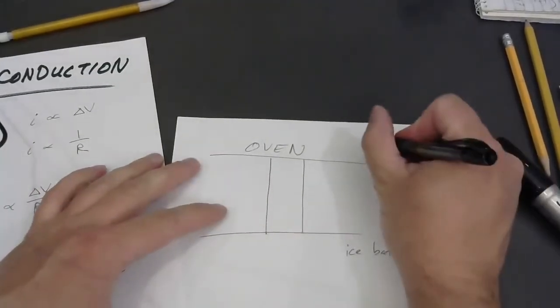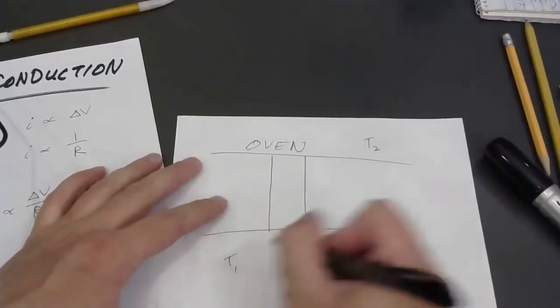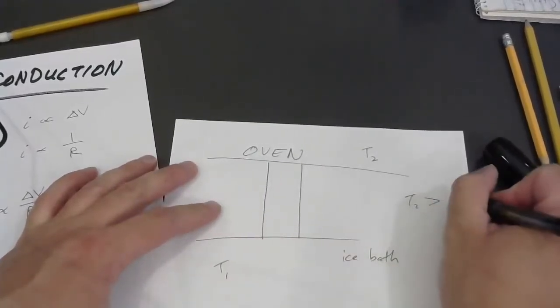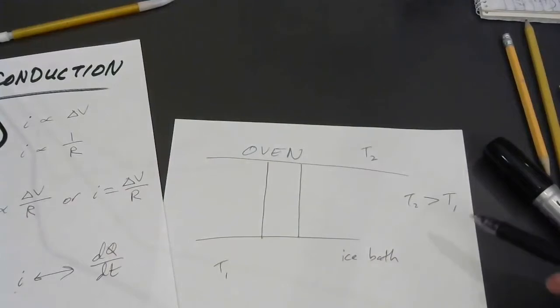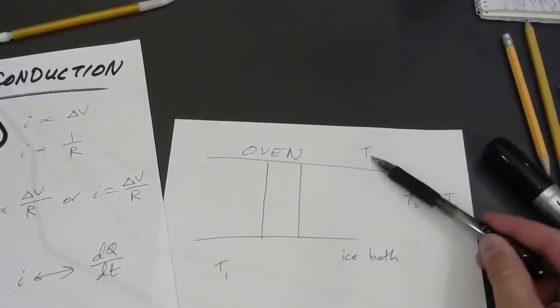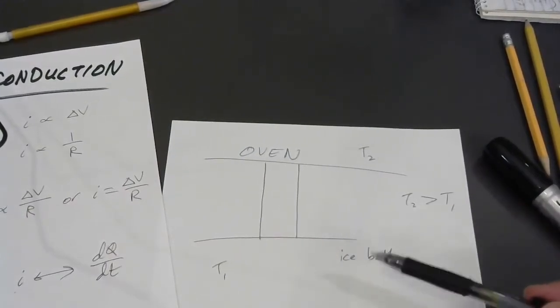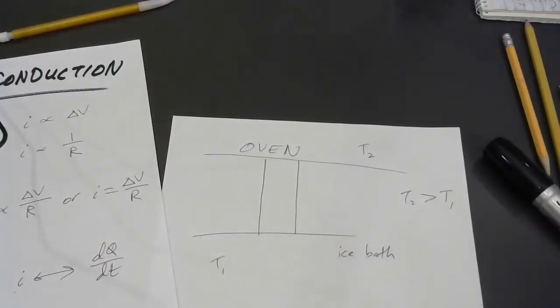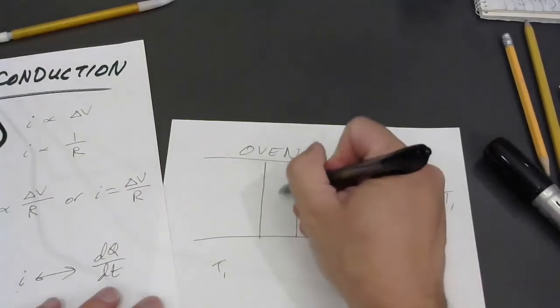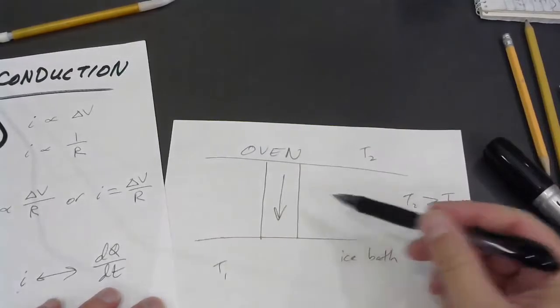So, this is at, I could call it T2. This is a temperature T1. We'll assume that T2 is greater than T1. And we know that heat will flow from the hotter reservoir to the colder reservoir. And let's assume that this is just air or something else that doesn't conduct heat very well at all. We know that the heat is going to flow down through this metal rod.